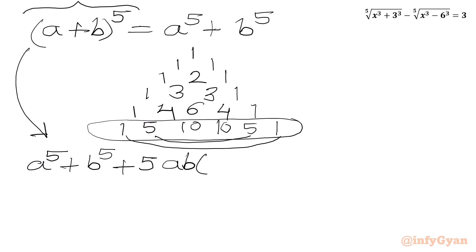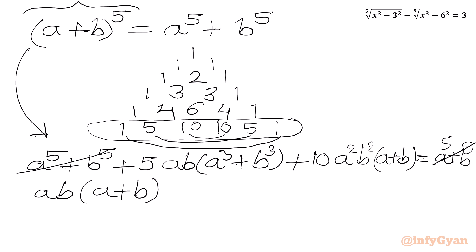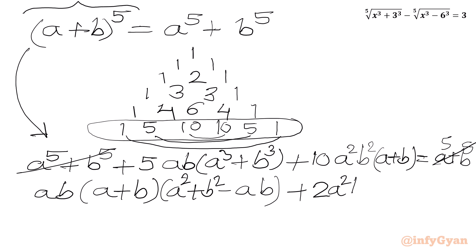For coefficient 5, I write 5 times (a⁴b + ab⁴). Taking ab as a common factor gives 5ab(a³ + b³). Then for coefficient 10, I write 10a²b²(a + b). The right-hand side is a⁵ + b⁵. We cancel a⁵ + b⁵ from both sides. The equation is divisible by 5, so dividing through: ab(a³ + b³) + 2a²b²(a + b) = 0.